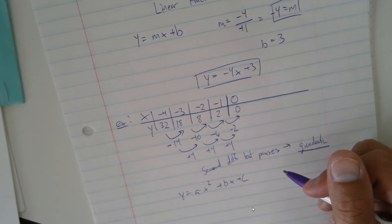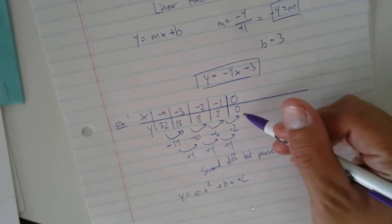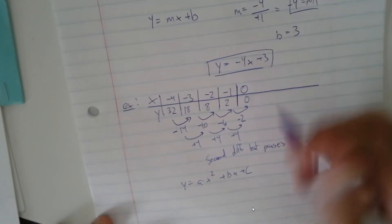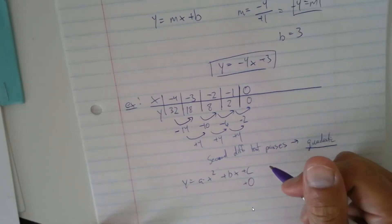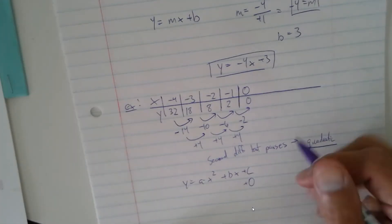For your c, this should just be your y-intercept. And it looks like it's going to be 0, so you don't have to worry about this. What you're supposed to do at this point is you're going to look specifically at y equals ax squared.